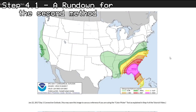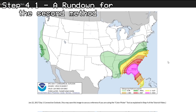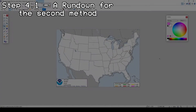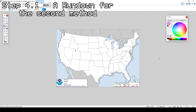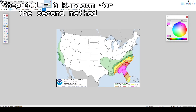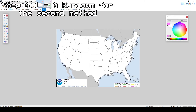To use the color picker method, go to my website and save the high convective risk image from January 22nd, 2017. This real-time outlook includes all of the different accurate colors of the outlines, fill-ins, state lines, and water boundaries. Since you can have several images open at a time in Paint.Net, you can use the tool to easily go back and forth between the real outlook and the template you will be using to make your very own custom outlook.